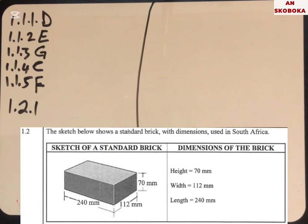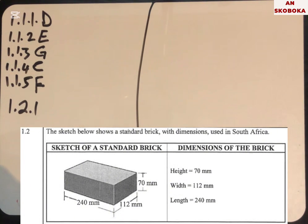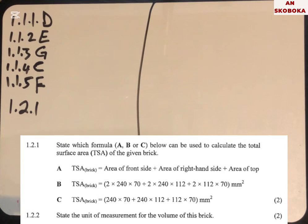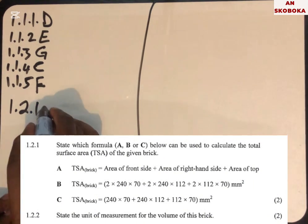Question 1.2.1: the sketch below shows the standard brick with dimensions used in South Africa — length of 240 millimeters, width of 112 millimeters, height of 70 millimeters. State which formula A, B, or C can be used to calculate the total surface area of the brick. The answer is B: TSA = 2×(240×70) + 2×(240×112) + 2×(112×70).